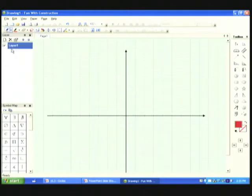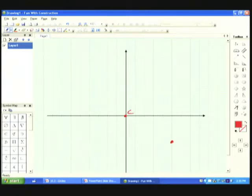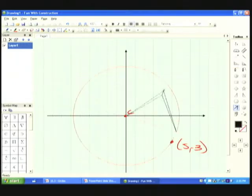I've got a center at zero, zero, and at five, negative three, I've got a point. Here's my center. Here's five, negative three. So if I draw the circle out, it looks like that.